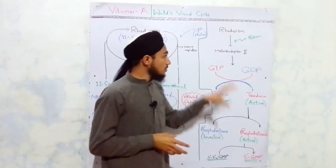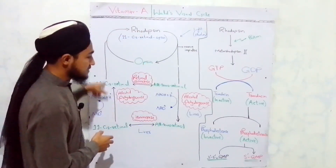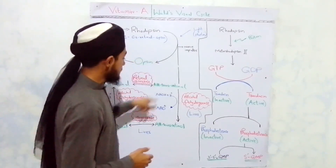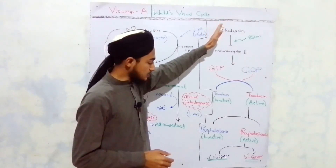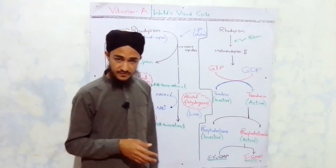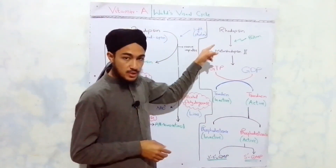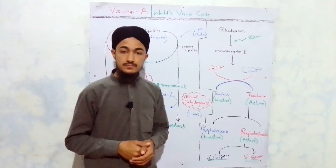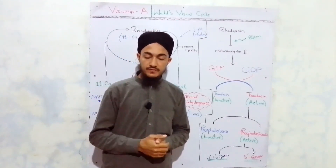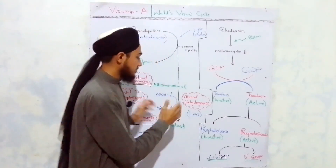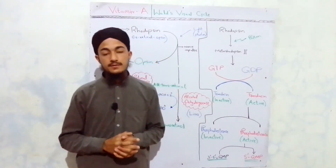That concludes the discussion of Wald's Visual Cycle — how the pathway begins with rhodopsin synthesis, how rhodopsin helps in the visual pathway, how the nerve impulse is initiated and generated, and how it is propagated to the visual cortex of the brain. In the next part, we will discuss additional important functions of vitamin A, followed by the deficiency manifestations of vitamin A, hypervitaminosis A, and the overall significance of vitamin A.